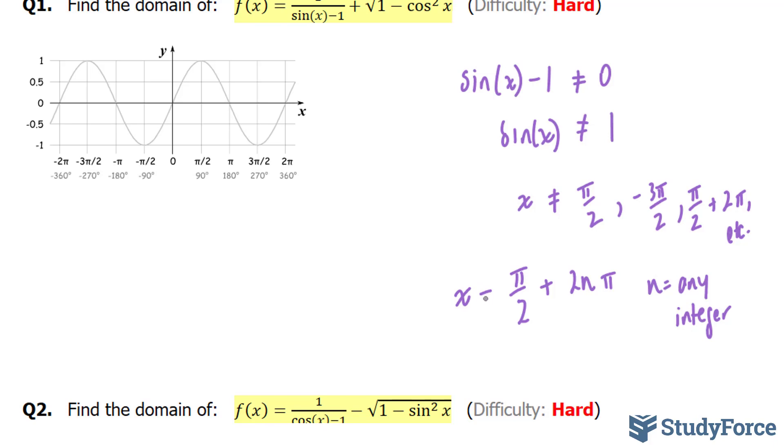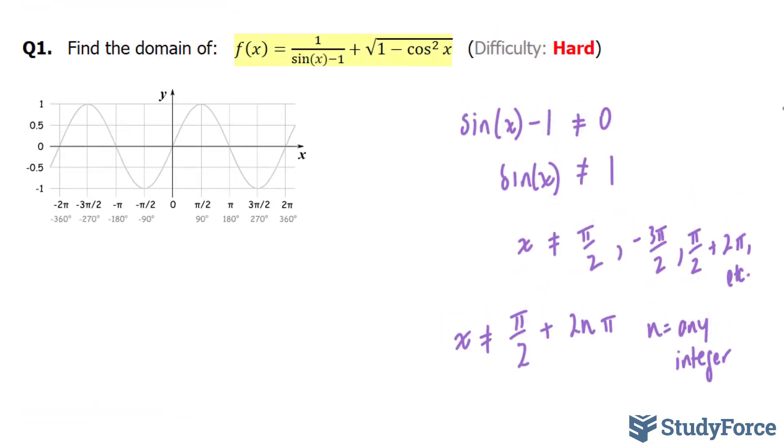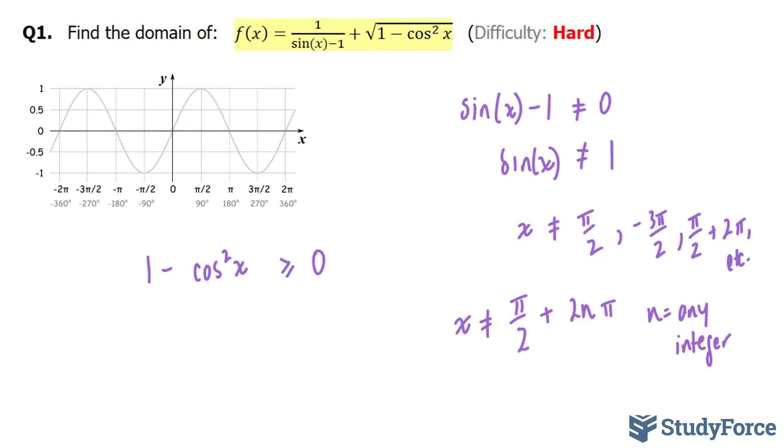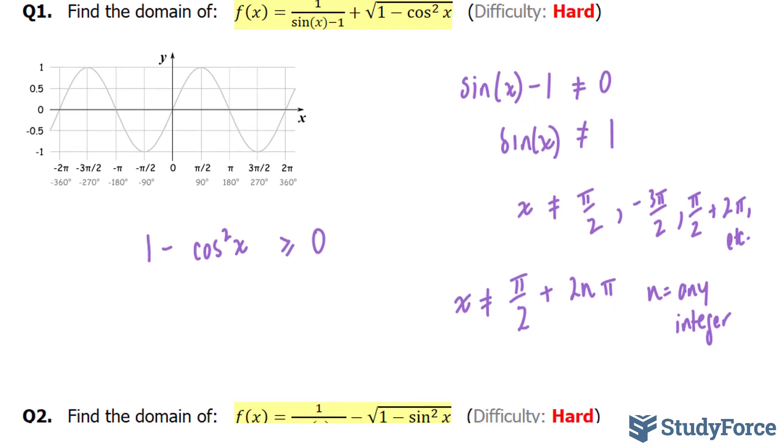In our next term, this one right here, we know that you cannot have anything less than 0 as a radicand, representing this. So 1 - cos²x must be greater or equal to 0. So we'll solve for x here. I'm going to bring this 1 over. And this becomes -1, cos²x.